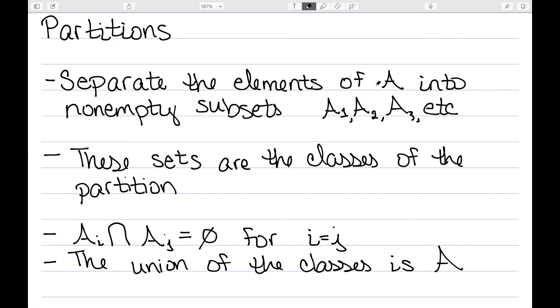So essentially, every element of A needs to be able to go in one and only one of these. It should not be possible for me to pick an element of A and put it into two of these subsets, and it should not be possible for me to pick none of these subsets. So it needs to go in exactly one of these.